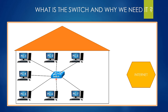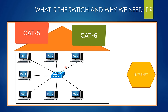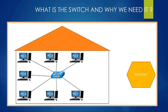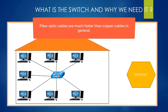We generally use copper cables for this task. The type of these copper cables can generally be Cat5 or Cat6 cable in small environments. Cat6 cables are faster than Cat5 cables, and Cat represents category. In addition to copper cables, some switches support fiber optic cables as well. Fiber optic cables are generally much faster compared to copper cables in data transmission — this is very important.